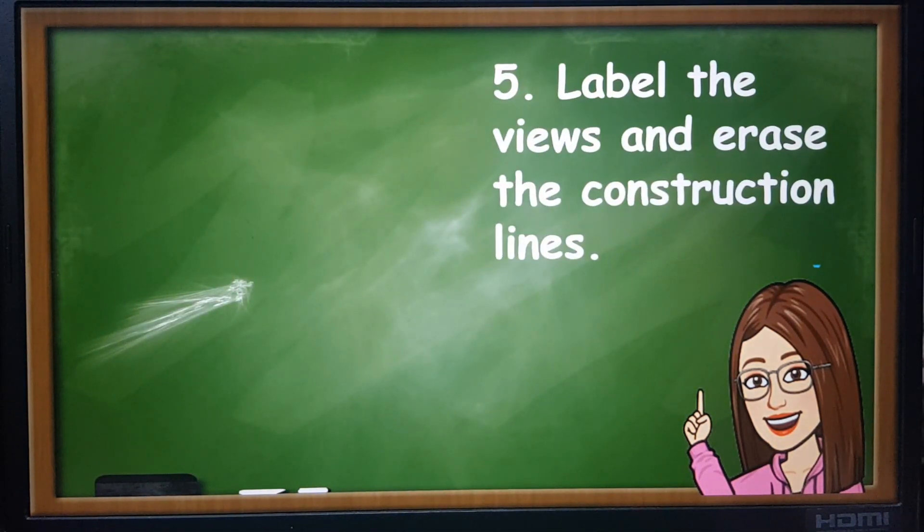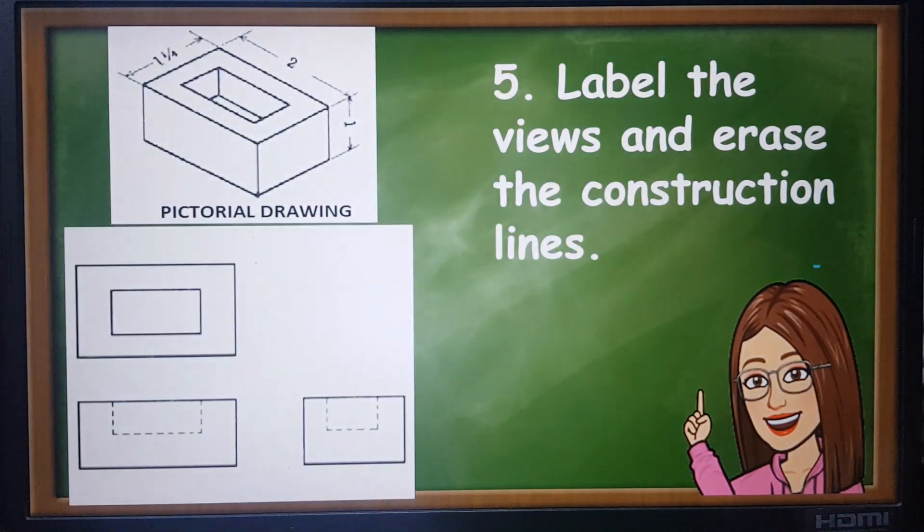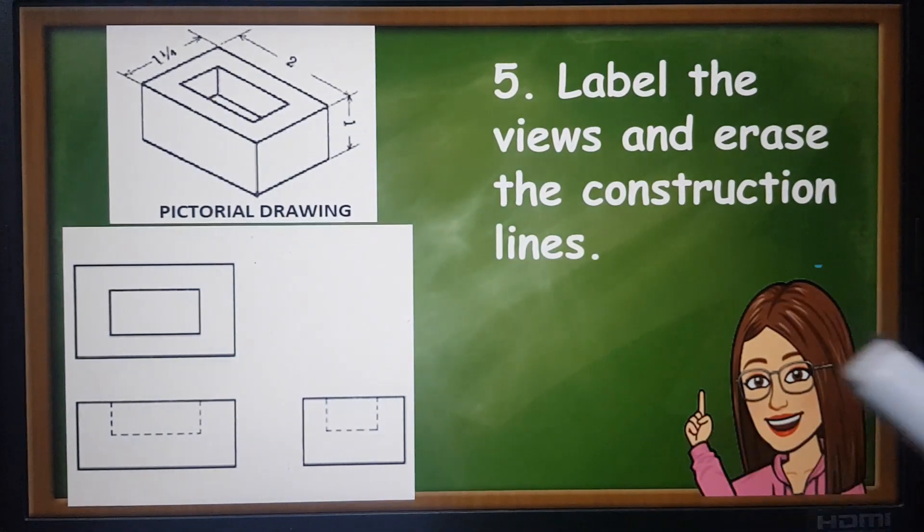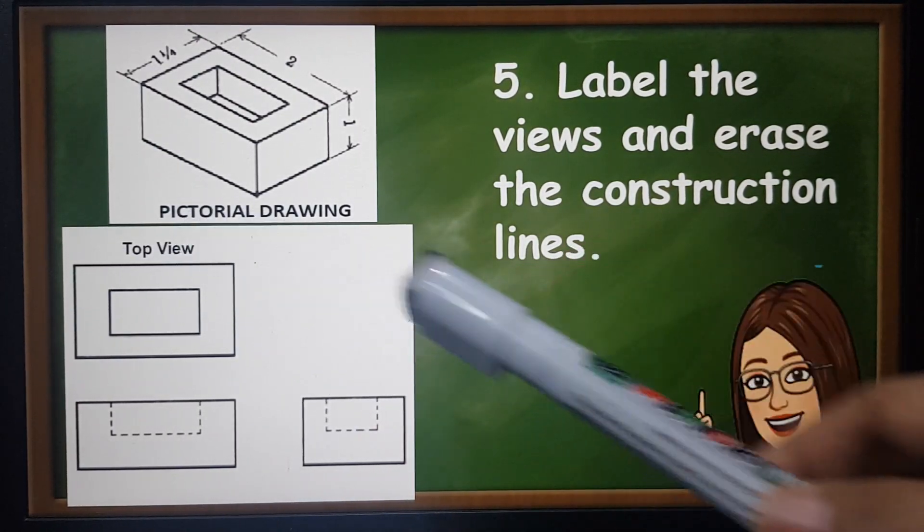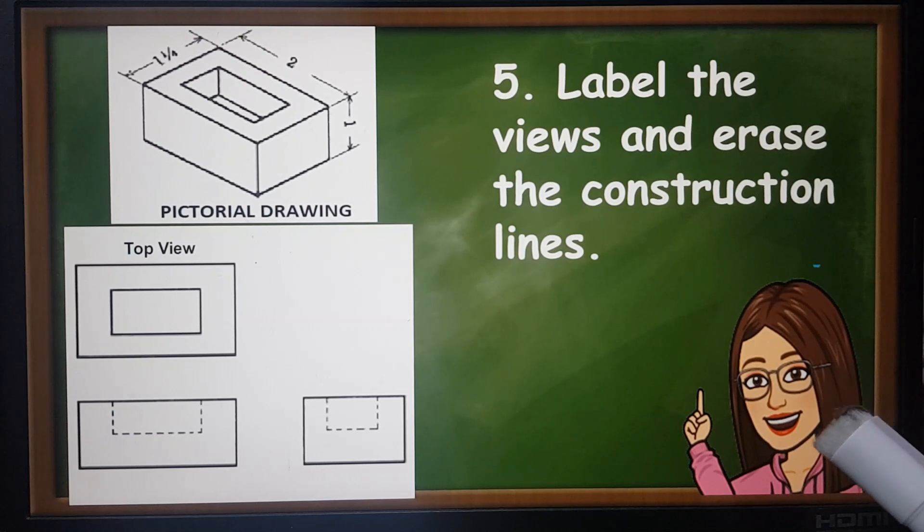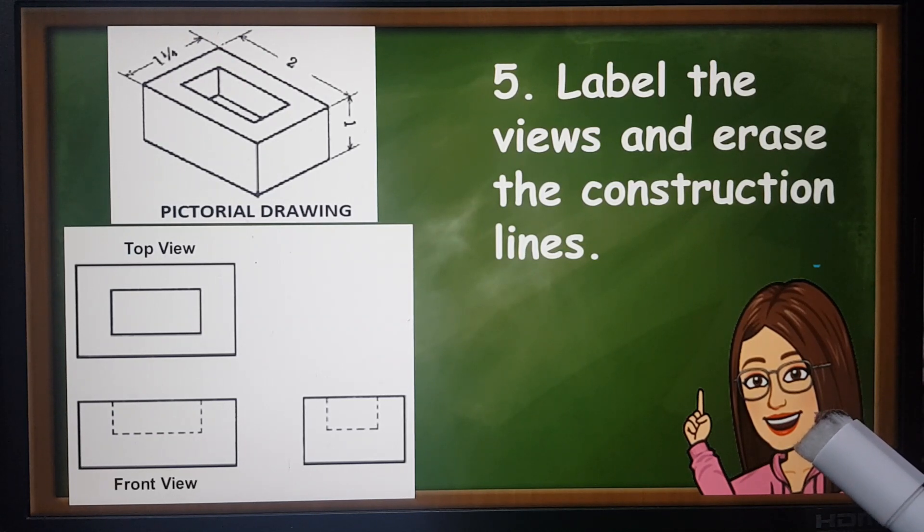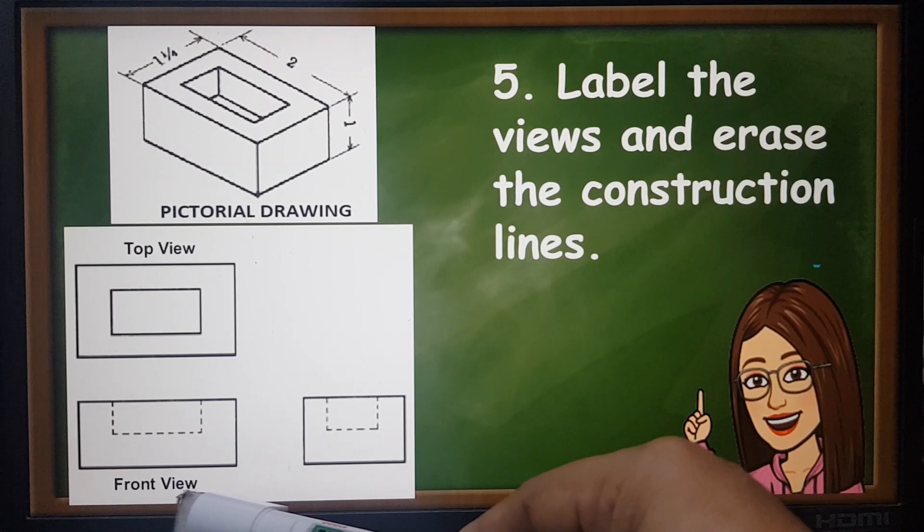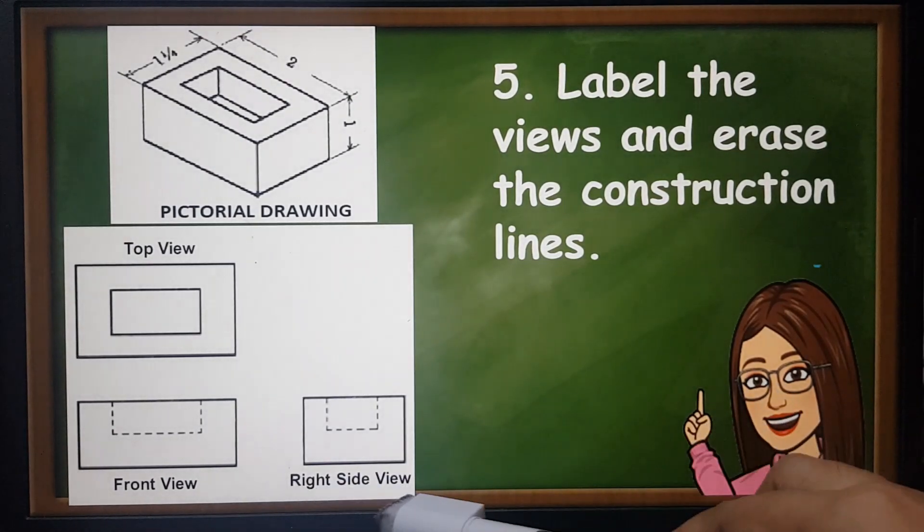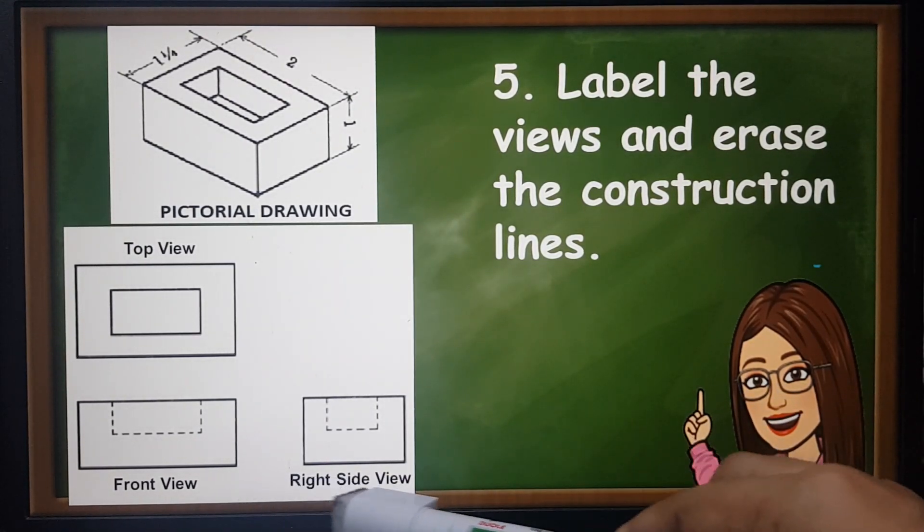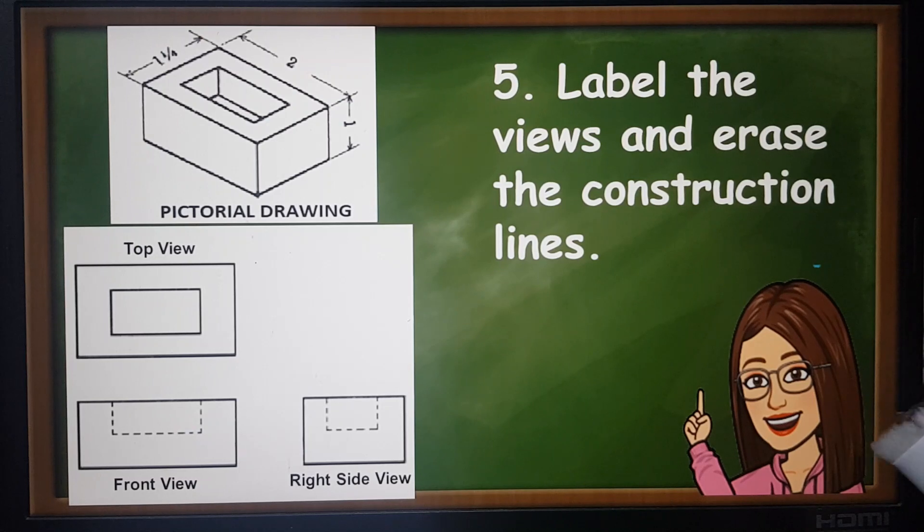Last step is label the views and erase the construction line. How to label the views? The top view is labeled on the top of the view. How about the front view? That is labeled below the view, and that is horizontally aligned, the front view and the right side view.